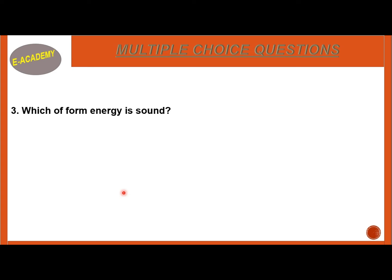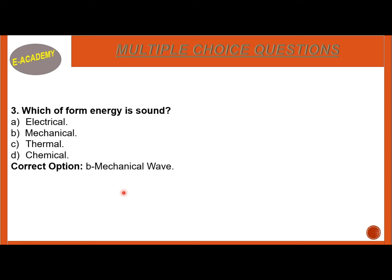Number 3: Which form of energy is sound? Electrical, Mechanical, Thermal, or Chemical? The correct option is B — Mechanical. Sound is a type of mechanical energy.